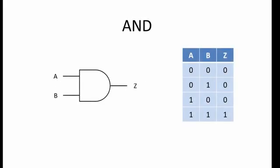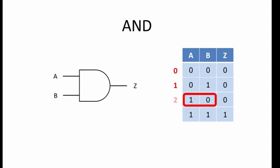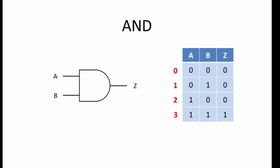This is an AND gate. There are two inputs here. When both inputs are 1, the output at Z is a 1. In all other circumstances, the output is 0. By convention, the combinations of inputs count upwards in base 10. This helps to ensure that they are all covered.